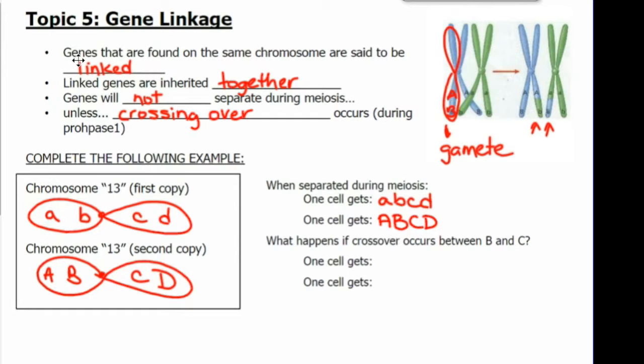If crossing over did occur between genes B and C, then one gamete would get little AB capital CD and the other gamete would get big AB little CD.